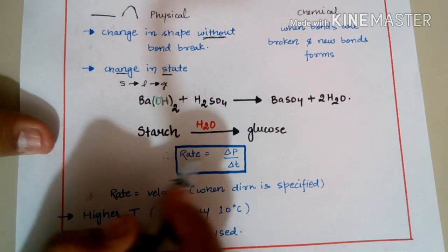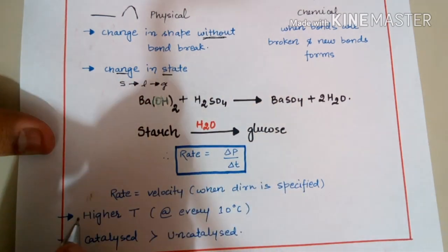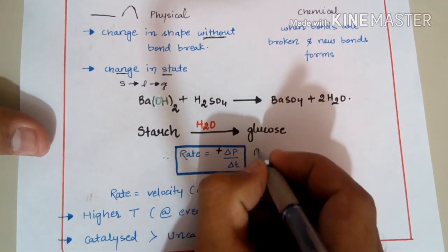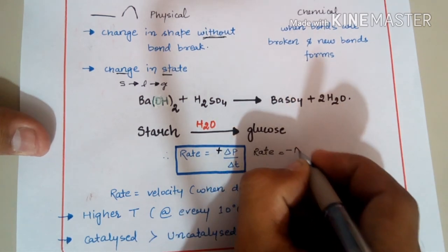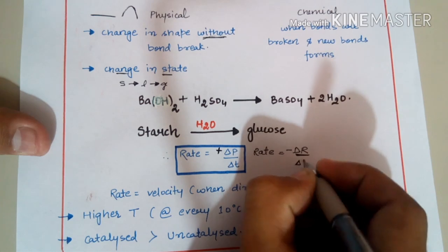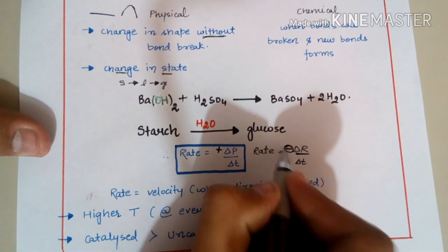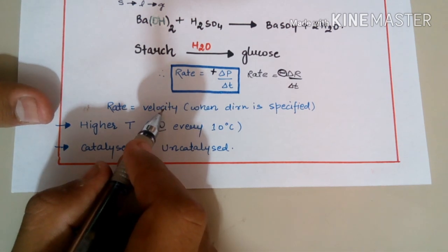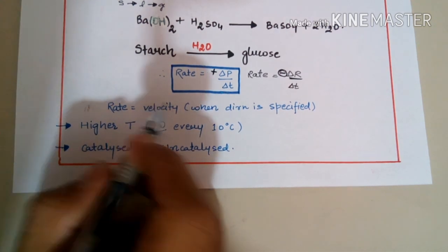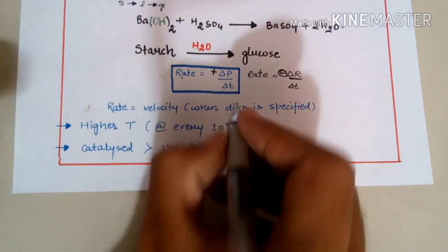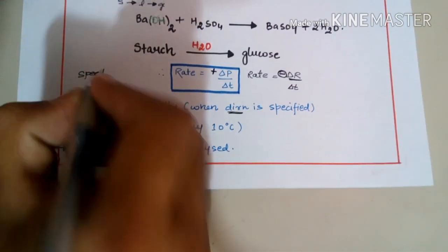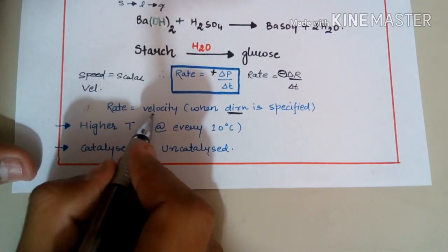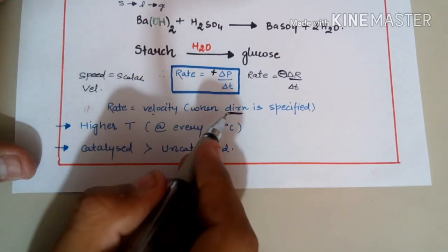The rate of a reaction is the rate of formation of product per unit time (positive), or the decrease in concentration of reactant per unit time (negative). Rate can also be called velocity when it has a specific direction — since speed is a scalar quantity and velocity is a vector quantity.